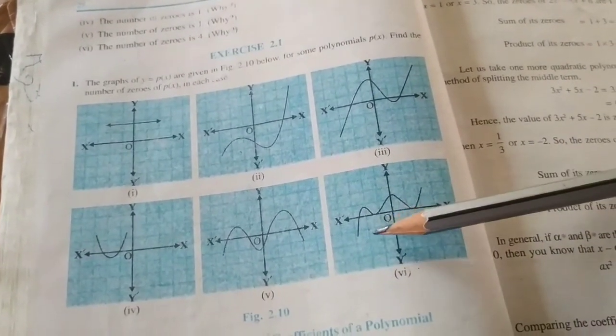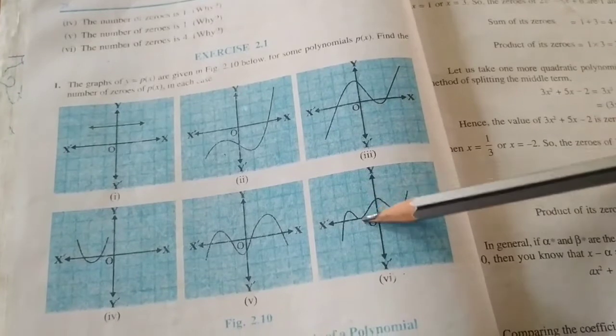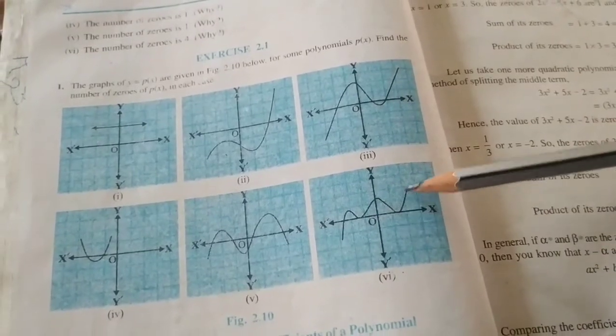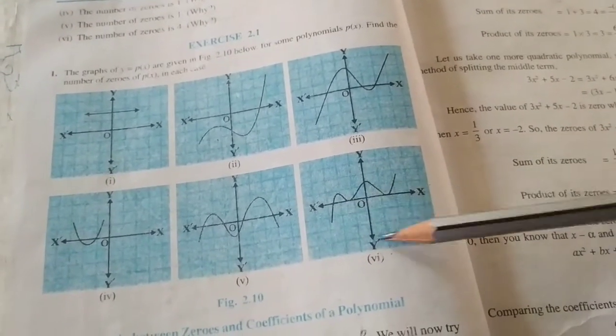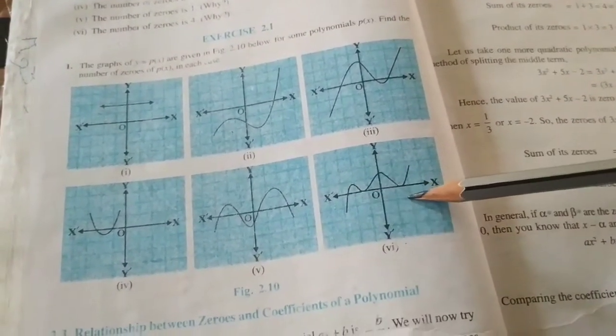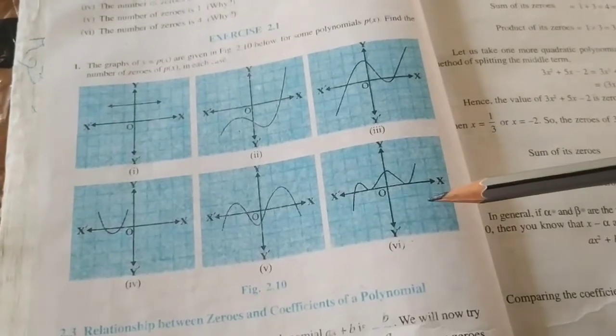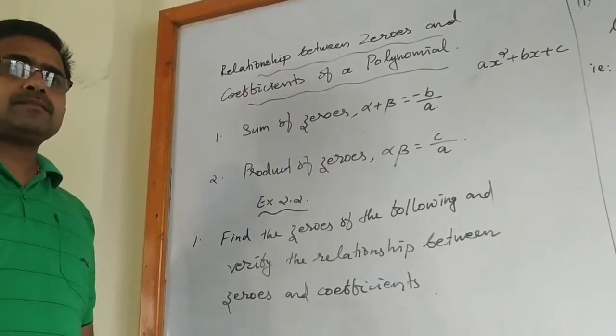In the last question: how many places is the graph touching the x-axis? 1, 2, 3 — three places it touches. That is why the number of zeros in this last one is 3.